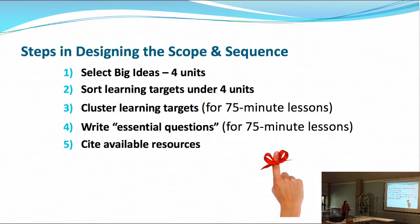So how did we do this? The steps in designing the scope and sequence — we'll go and teach this — first we selected the big four ideas, the big unit ideas. There's four units. We sorted learning targets under those four units through some very clever ways. They clustered the learning targets. Now what is a learning target? Remembering this phrasing from the framework — those are those doctrinal statements and they're like 4.1.1.2.